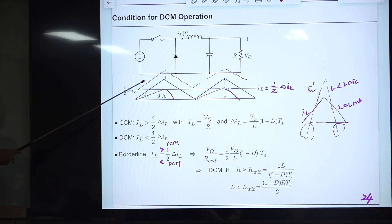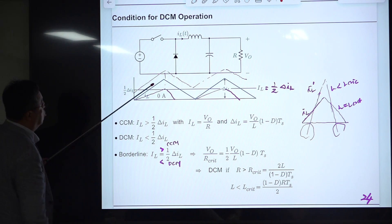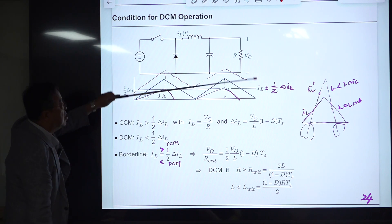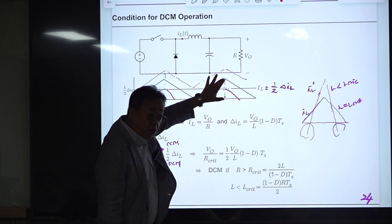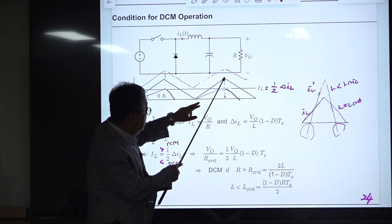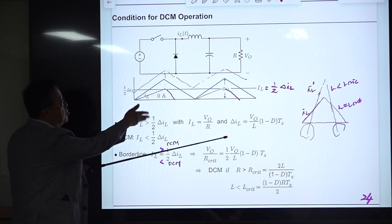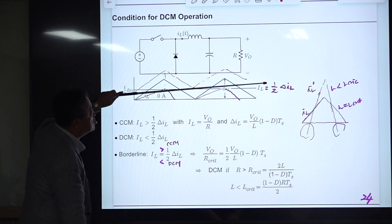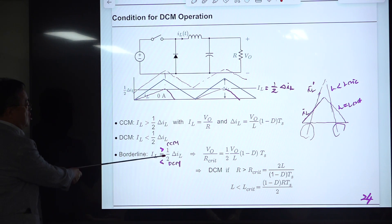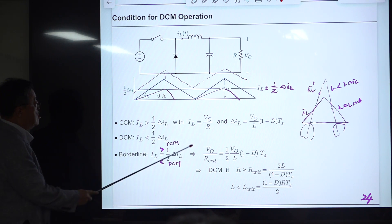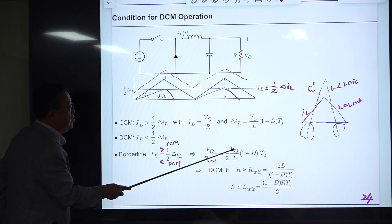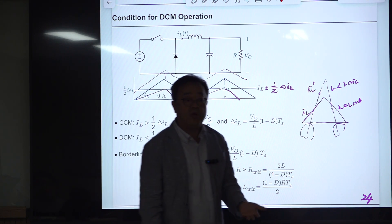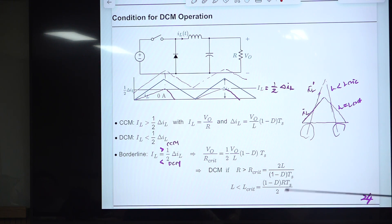The critical situation is when the converter is on the borderline of CCM and DCM. The condition is that the average value of the inductor current equals exactly half the ripple component, making the current start from zero, reach peak, and come back to zero. For this particular value of R we call it R-critical.